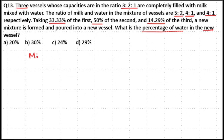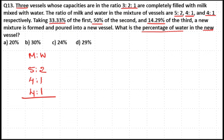We have milk and water ratios here. Milk and water in the three vessels are in the ratio 5:2, 4:1, and 4:1. Now, 5+2 = 7 parts, 4+1 = 5 parts, and 4+1 = 5 parts. So the LCM of 7, 5, and 5 is 7×5 = 35.